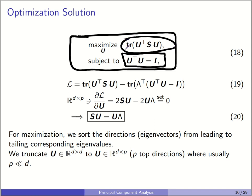When we set the derivative to zero, we get equation 20: S*U = U*lambda. This is just eigenvalue decomposition. The solution to the PCA optimization problem is the eigenvalue decomposition of the covariance matrix S. Here, U contains the eigenvectors of S and lambda contains the eigenvalues. We sort the projection directions (eigenvectors) from largest to smallest corresponding eigenvalue, because we are maximizing. We then truncate U to the top P directions with the largest eigenvalues. U becomes D by P, where P is typically much less than D.